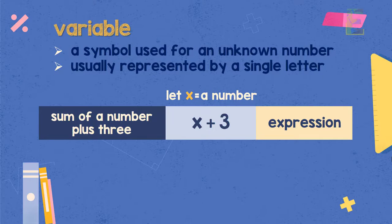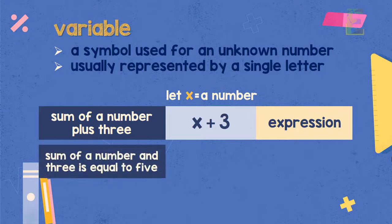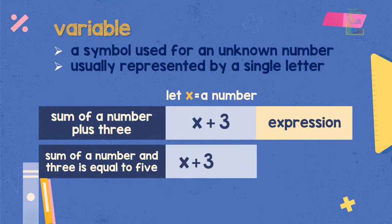Now how about if we have a phrase like sum of a number and 3 is equal to 5. So again, we can represent a number using the variable x. Sum of a number and 3 can be written as x plus 3. And then, equal to 5 can be written using the symbol of equals and then the number 5.